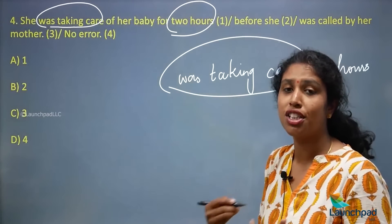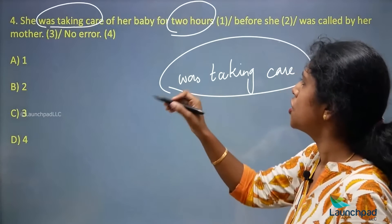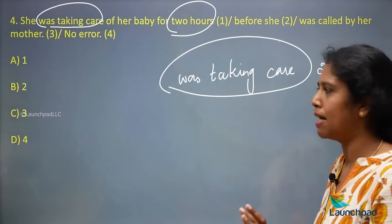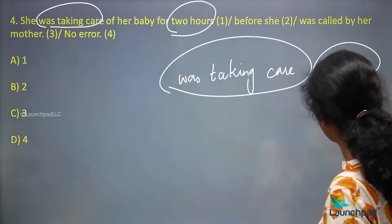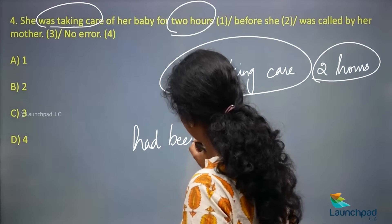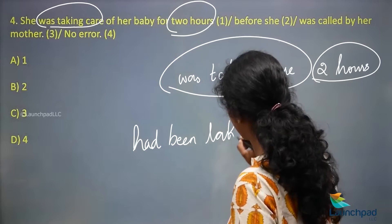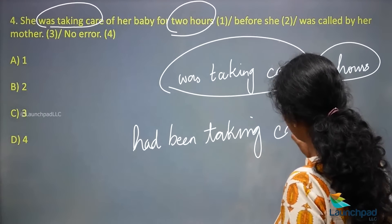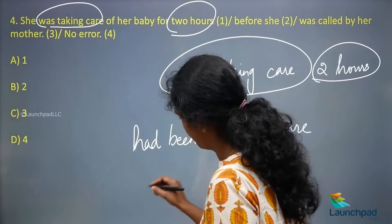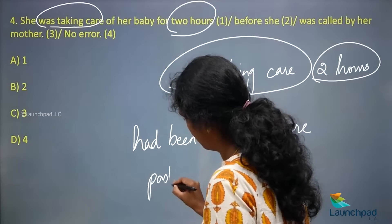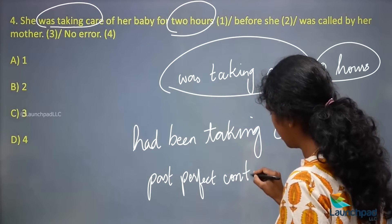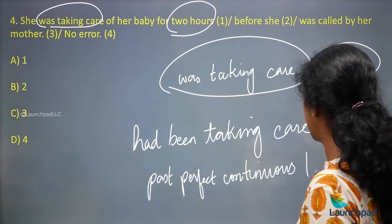If it were 'was taking care,' that would be simple past continuous. But since there is a duration of two hours, this should have been 'had been taking care for two hours,' which is your past perfect continuous tense. So the correct sentence is: 'She had been taking care of her baby for two hours before she was called by her mother.'